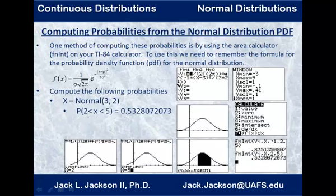For the next one, we want a normal distribution with mean 3 and standard deviation 2. The formula gets a little more complicated — we replace mu with 3, so it's X minus 3 in the numerator. Sigma is 2, appearing in both the denominator and the exponent as 2 squared. For the window, the mean is 3 and standard deviation is 2, so we go about 3 standard deviations each side: 3 minus 6 is negative 3, and 3 plus 6 is 9. That gives us a good graph.